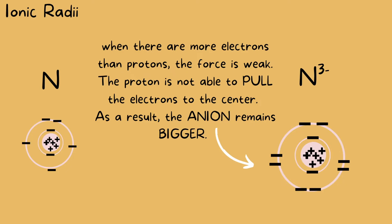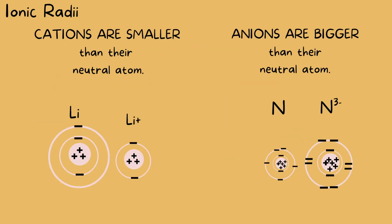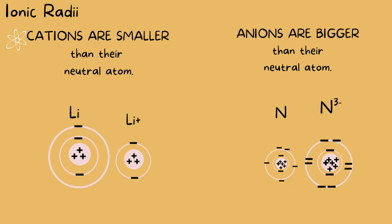The takeaway here is that if you are presented with a question involving ionic radii, remember: cations are smaller than their neutral atom and anions are larger than their neutral atoms. By the way, if you are not sure what ions are — like cations and anions — I will leave a link below of my lecture involving those things.